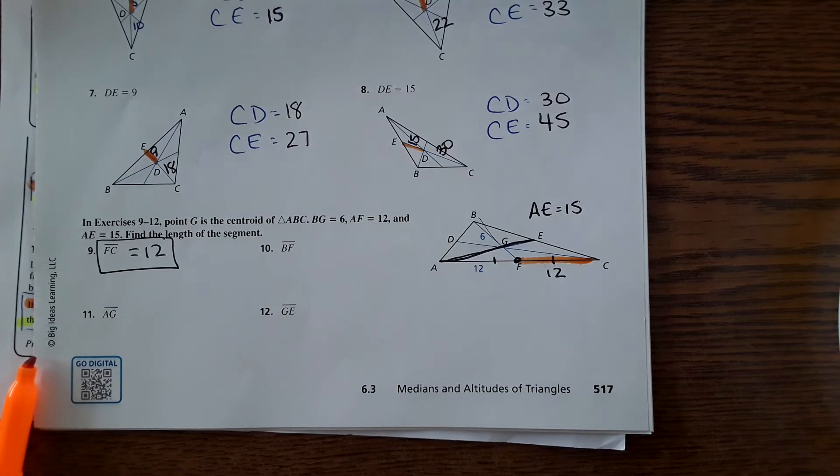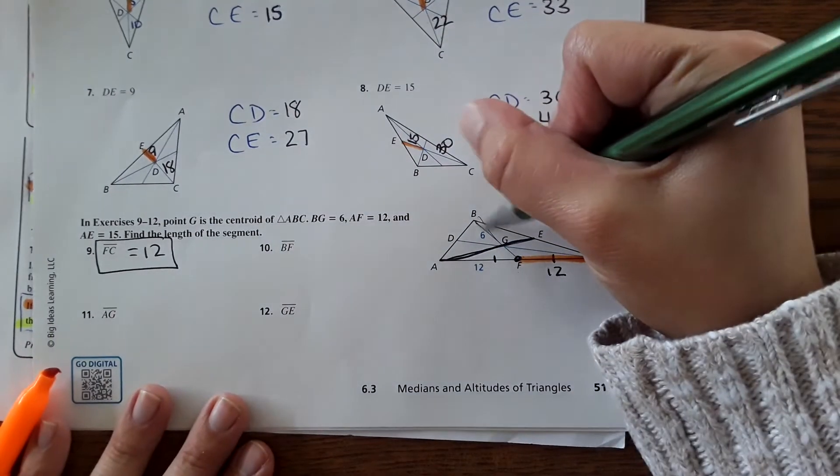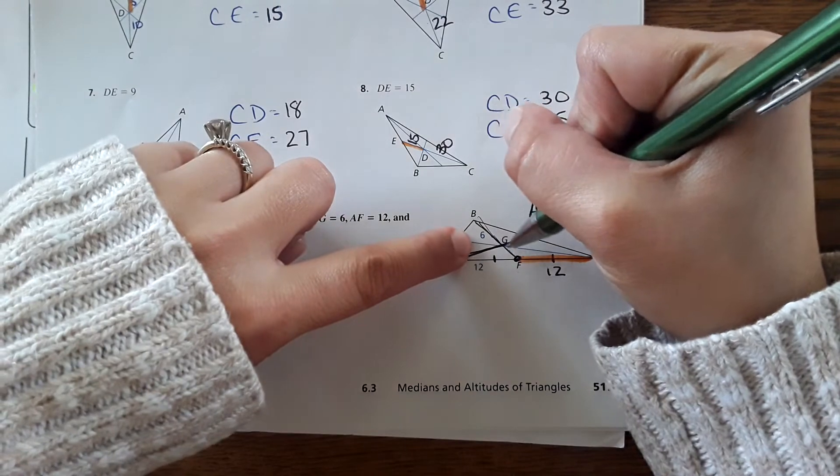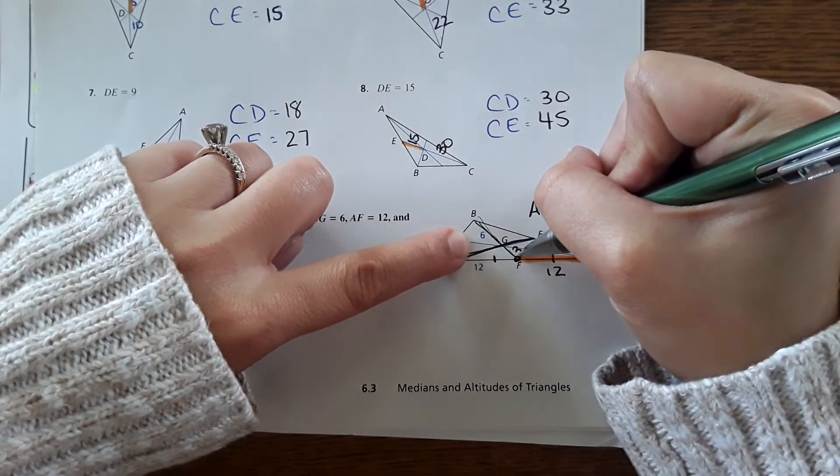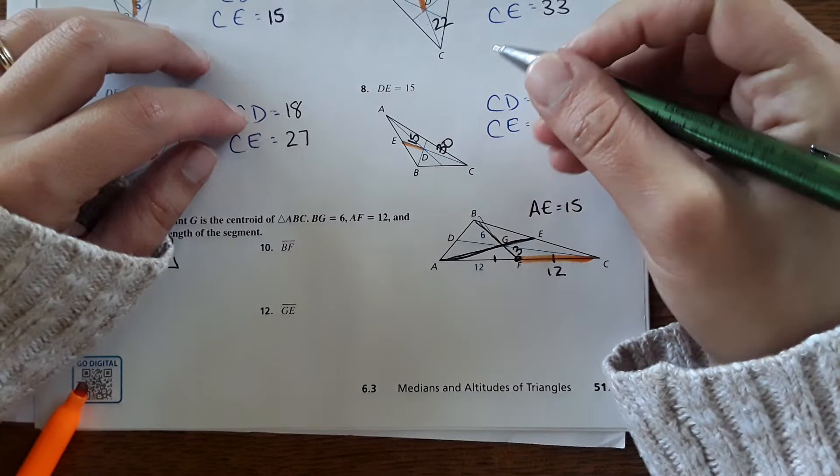Then it asks for BF, so the whole length here. It shows that this side is 6, so then this shorter side would be 3, and then 6 plus 3 is 9.